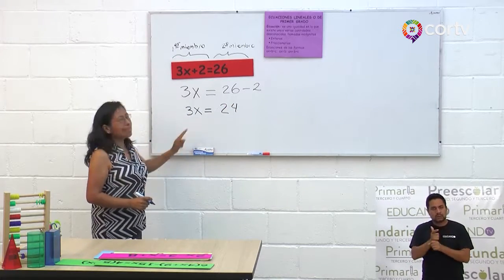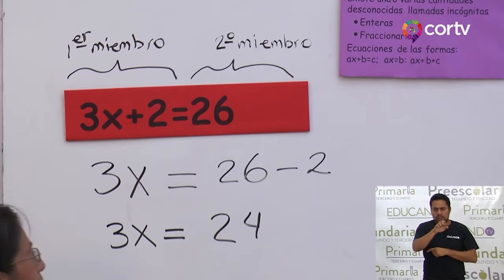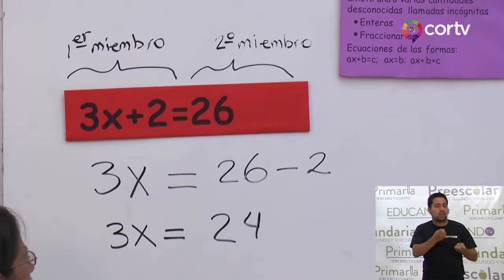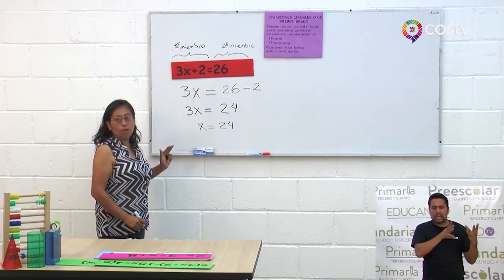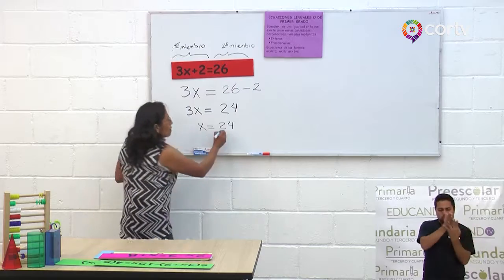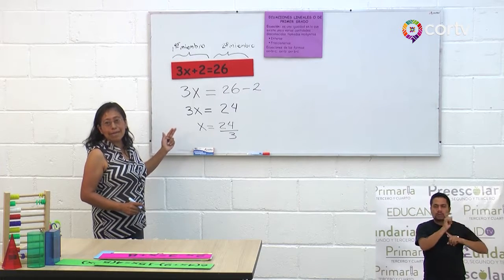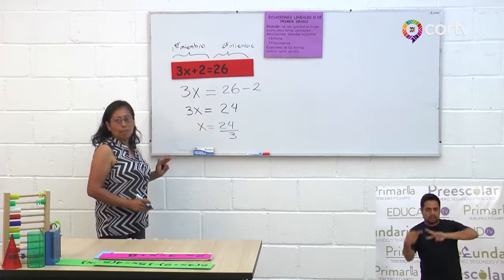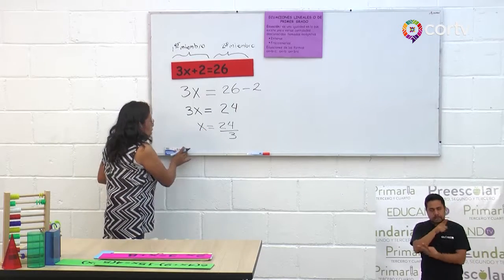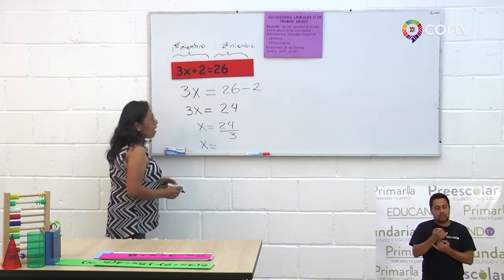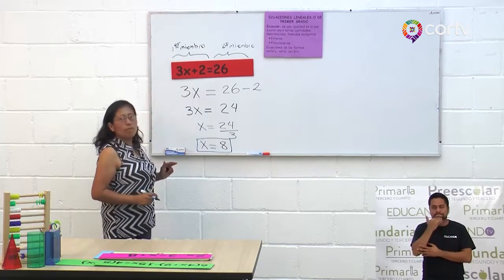Aquí tenemos 3X igual a 24. Vamos a despejar la X, es decir, dejar solita la X para encontrarle su valor. Ponemos X igual a 24. Este 3 está multiplicando, entonces va a pasar dividiendo, porque la multiplicación es la operación directa y la división es la operación inversa. X igual a 24 entre 3, que es 8. Este es el valor de X de esta primera ecuación.